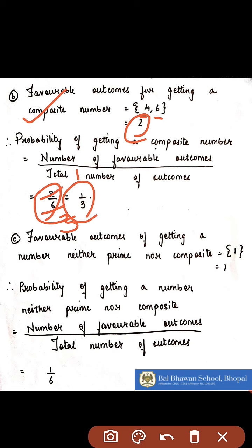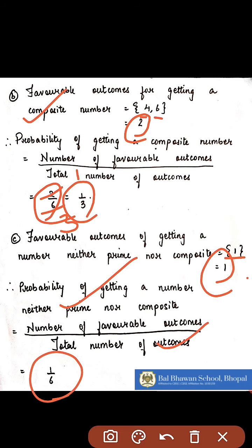In the next part, they have asked for the favourable outcomes of getting a number which is neither prime nor composite. The probability of getting a number which is neither prime nor composite is 1 upon 6.